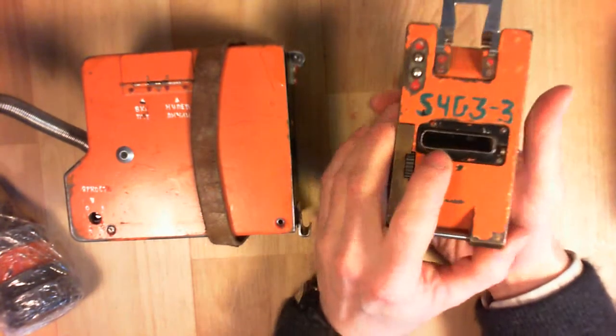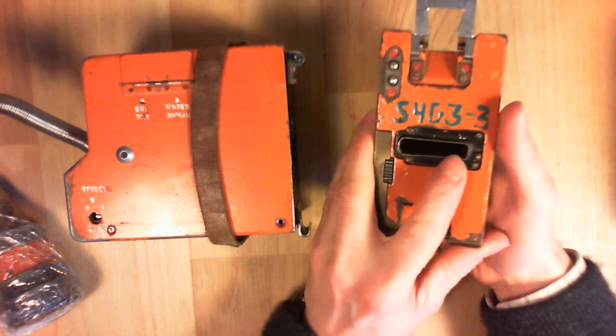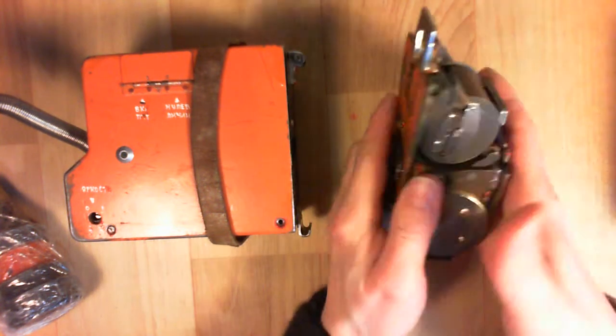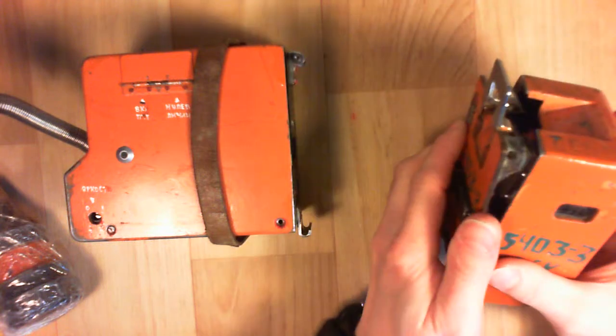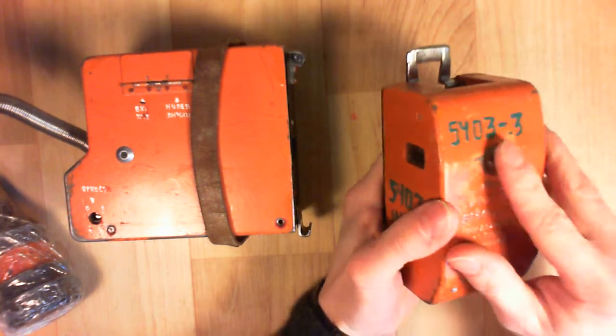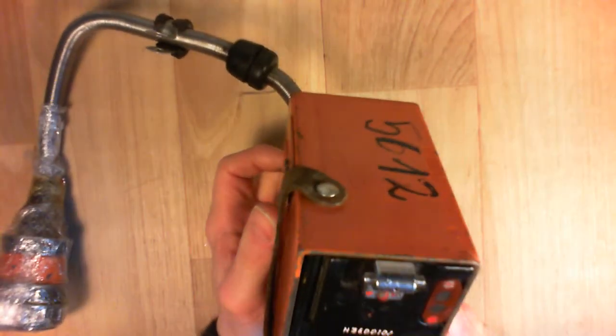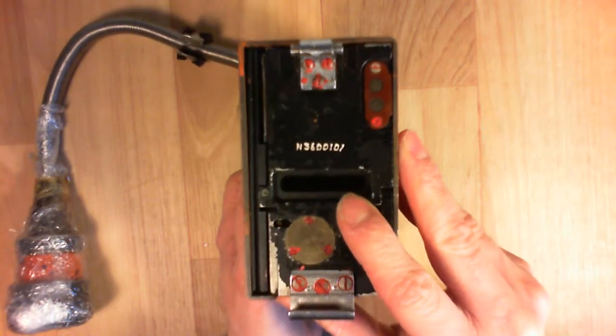You have a window here through which light goes to write on the film. The other half of the system is in here. You can see the matching window.